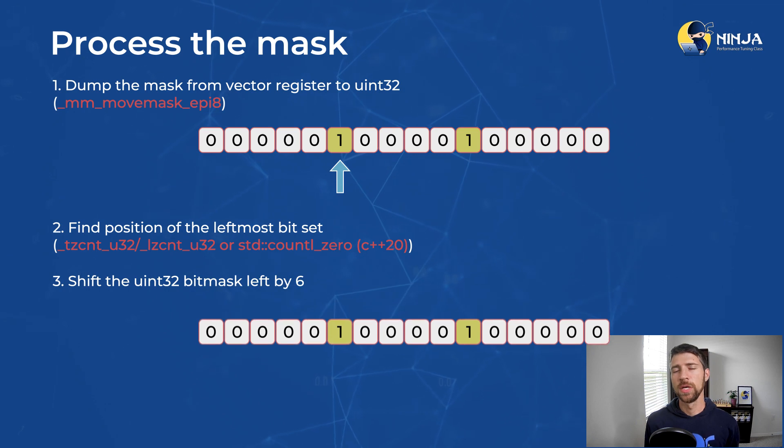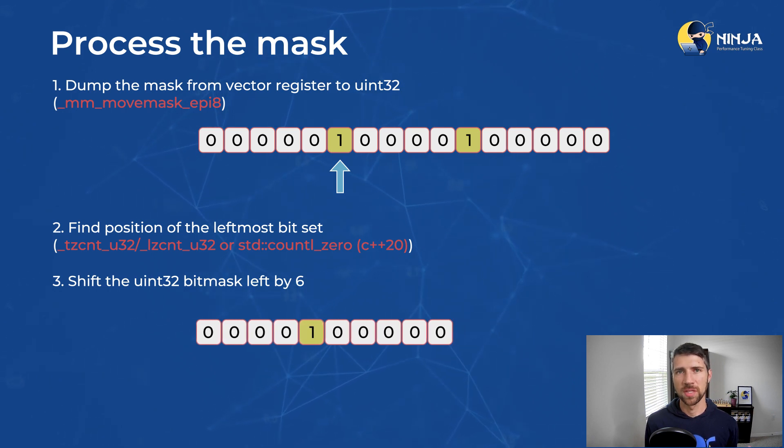Then what we need to do is we need to discard the bits that we already processed by shifting the mask left in this case by six positions. And this will allow us to find the next set bit. And we repeat this finding the set bit and shifting mask left procedure until there is no more set bits found.